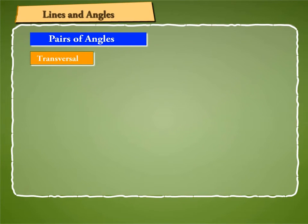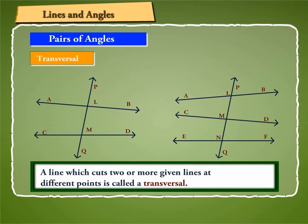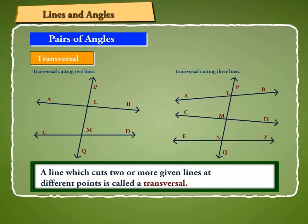Let us now learn what a transversal is. A line which cuts two or more given lines at different points is called a transversal. In the given figure, transversal PQ cuts two lines AB and CD at points L and M respectively, and in another figure, transversal PQ cuts three lines AB, CD, and EF at points L, M, and N respectively.